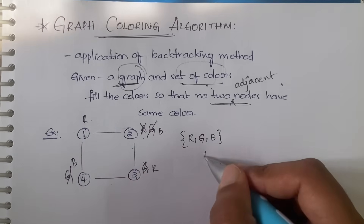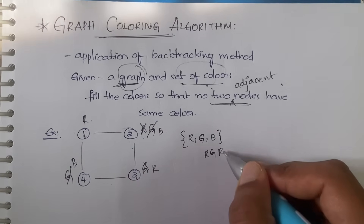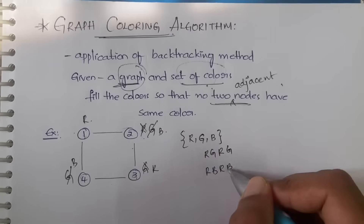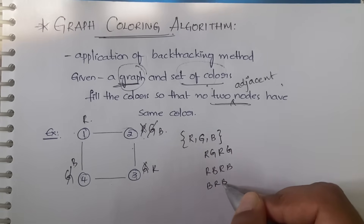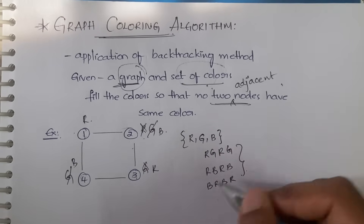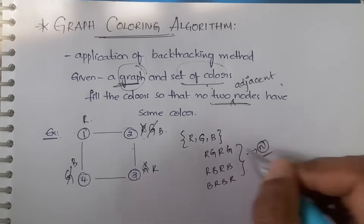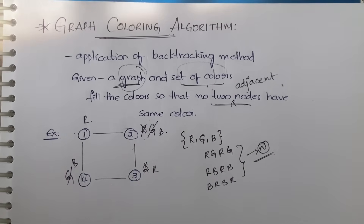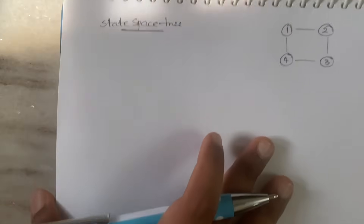Another possible combination: instead of green you can take blue, so you can color the graph R-G-R-G, or R-B-R-B, or B-R-B-R — there are many ways possible. You will get n number of ways to color the graph. Similarly, with backtracking you get multiple solutions, and applying the backtracking algorithm to graph coloring will also yield multiple solutions, which we will understand using a state space tree.